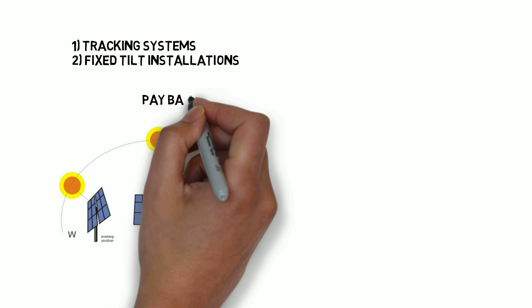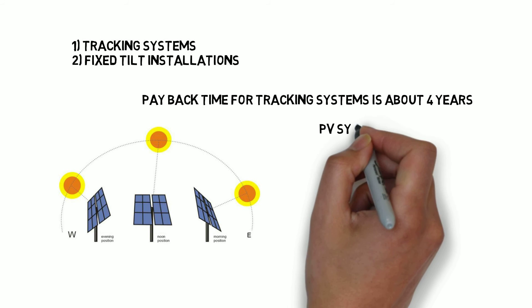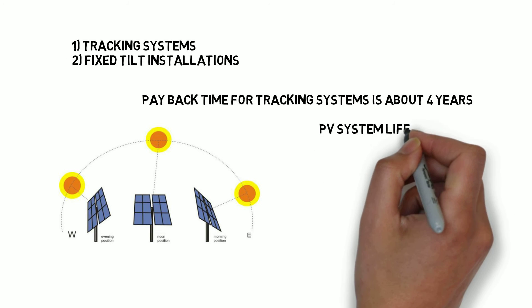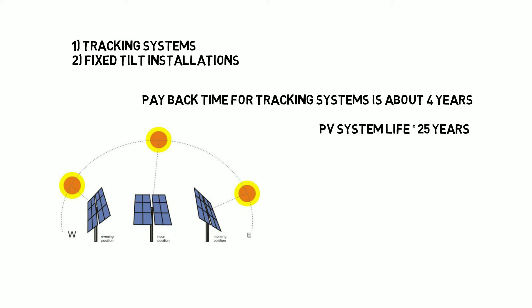Tracking systems generally pay their added installation costs within a period of four years because they can provide additional solar gain of more than 30 percent depending upon their location.